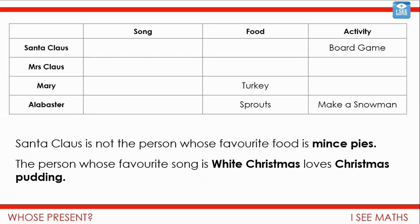I've selected another two clues. Think: which one or which ones can we position now? Santa Claus is not the person whose favourite food is mince pies — so that only leaves one person. It must be Mrs Claus who likes those mince pies. And then, the person whose favourite song is White Christmas loves Christmas pudding. The only person where we haven't identified their favourite food is Santa Claus — it must be Santa who loves Christmas pudding, and his favourite Christmas song must be White Christmas.